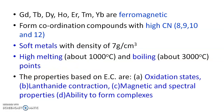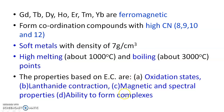All lanthanide elements form coordination compounds with high coordination numbers — 8, 9, 10, and 12. The properties of lanthanides based on electronic configuration include: oxidation states, lanthanide contraction, magnetic and spectral properties, and ability to form complexes. These four properties will be discussed in detail in the next videos.